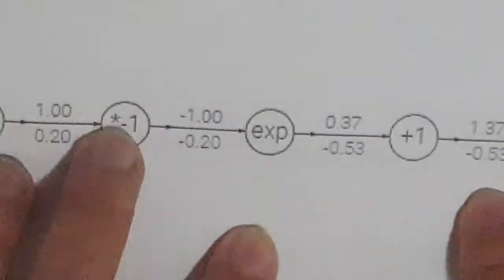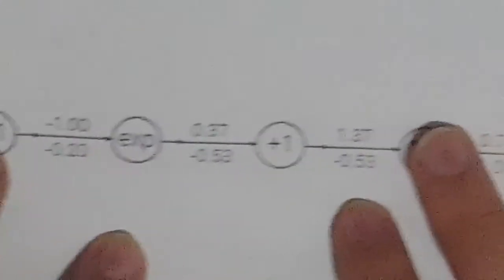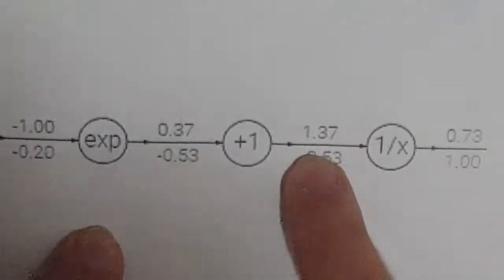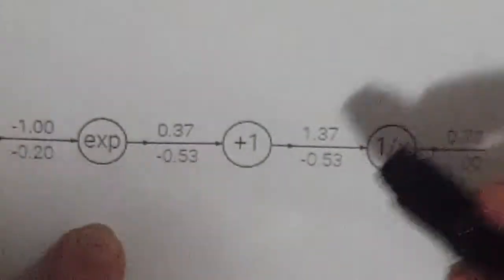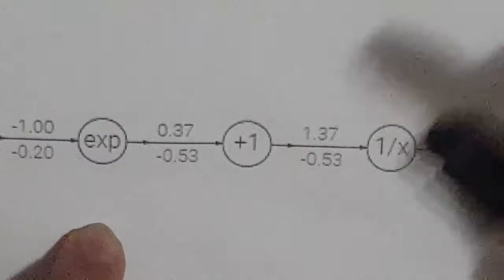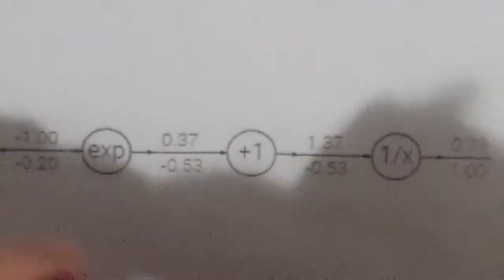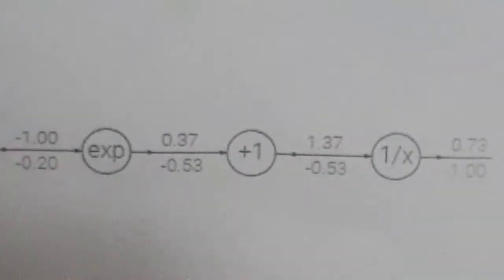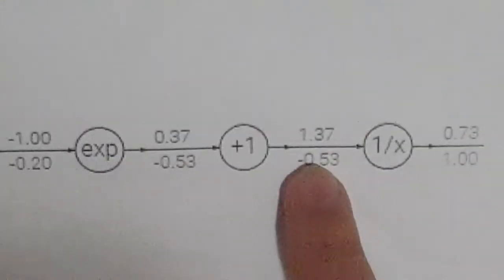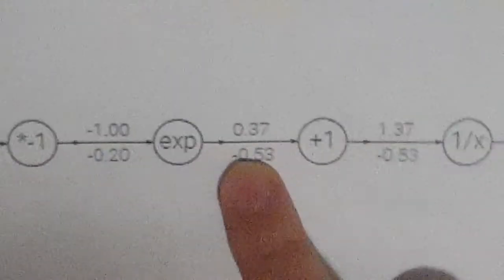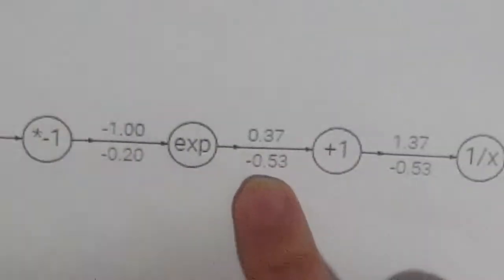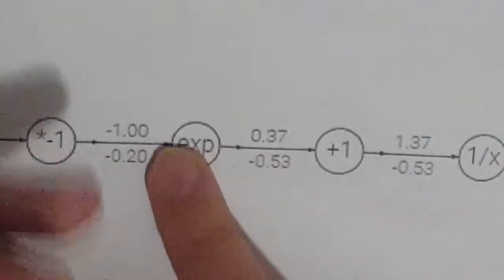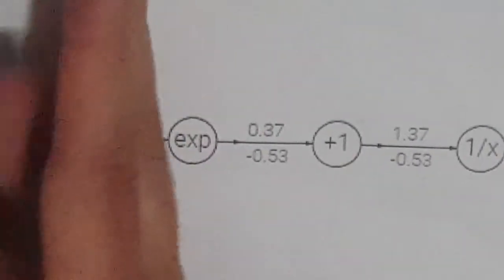We have x + 1 next. The derivative of x + 1 is just 1. We multiply by our previous derivative -0.53, and we get -0.53 again. So the gradient at this point is -0.53.